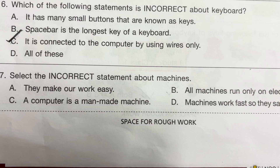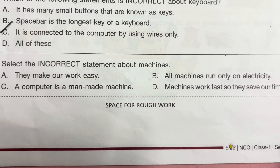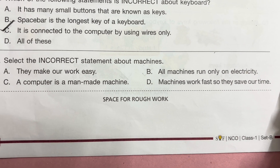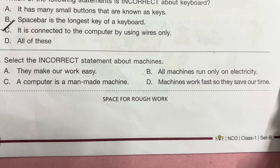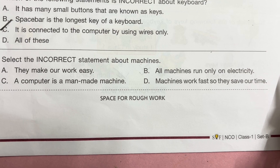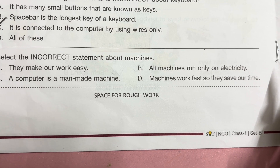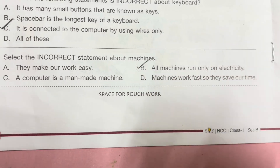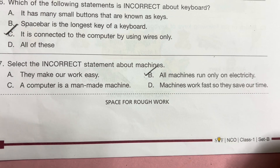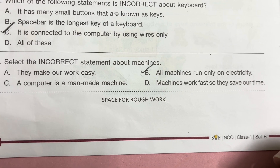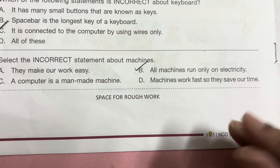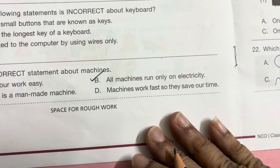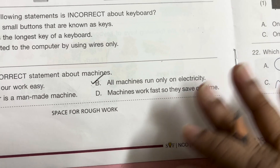Question 17: Select the incorrect statement about machines. Option A: They make our work easy — correct. Option B: All machines run only on electricity — incorrect. Option C: A computer is a man-made machine — correct. Option D: Machines work fast, so they save our time — correct. So answer is B.